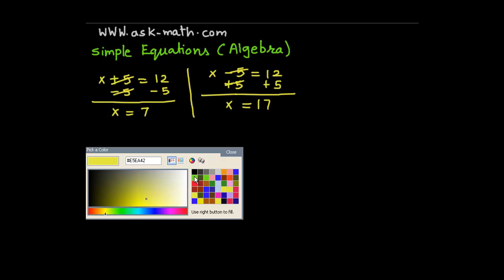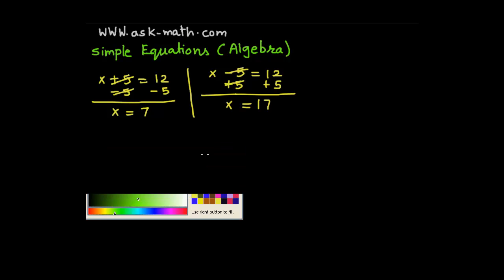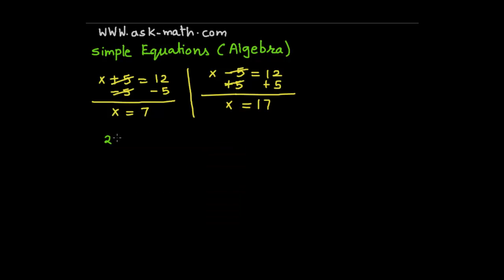Now suppose I am taking an example of multiplication. Suppose 2x is equal to 12. Here we have 2x, that means 2 times x. So to find the value of x, divide both sides by 2 to make x alone. So x is equal to 6.